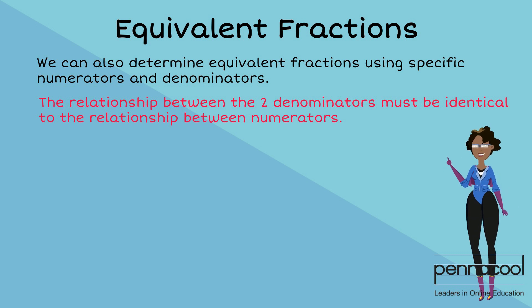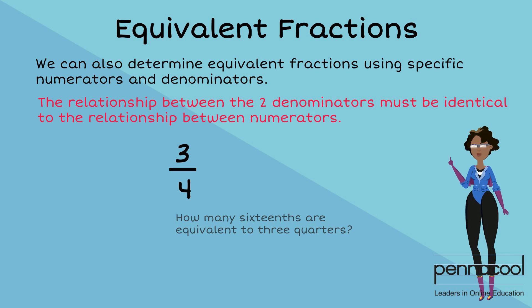Let's look at this example. When given the fraction 3 quarters, we want to find out how many 16ths are equivalent to 3 quarters. To do this, we must look at the relationship between 4 and 16. We divide 16 by 4 and get 4.